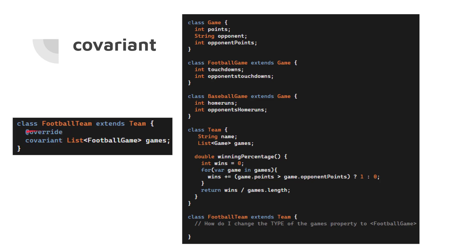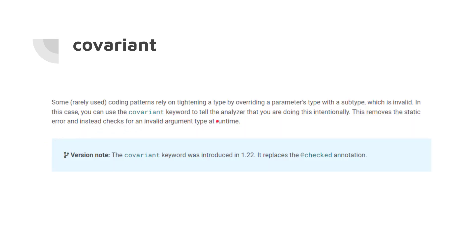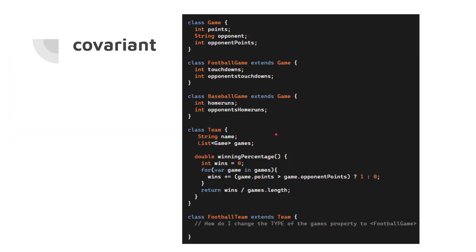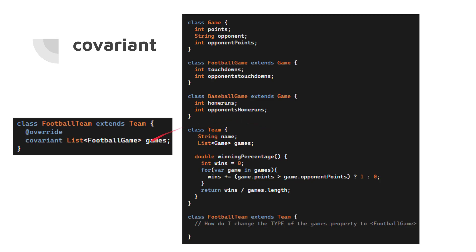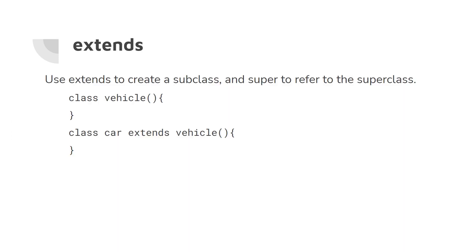When you use covariant you tell the analyzer you are doing this intentionally, so you don't get an error. As mentioned, this is rarely used — not something you deal with every day — but it's a concept to keep in mind. 'Extends': we use this to create a subclass and 'super' to refer to the superclass. For example, we have a Vehicle class and we create a Car class that extends Vehicle, adding its own features.